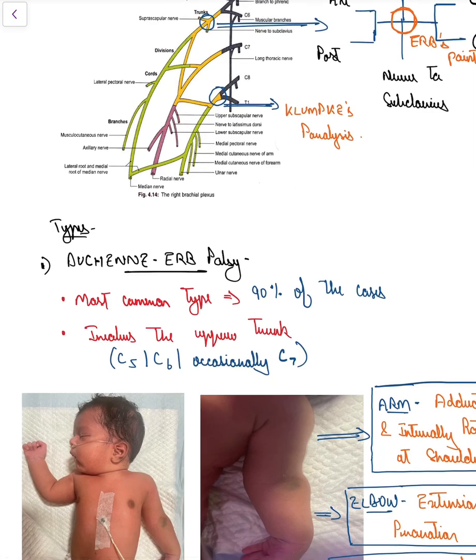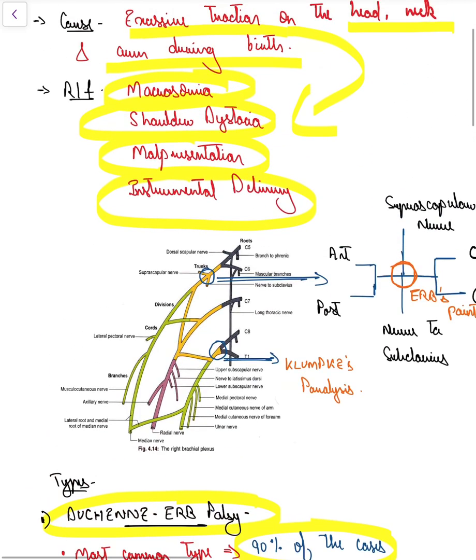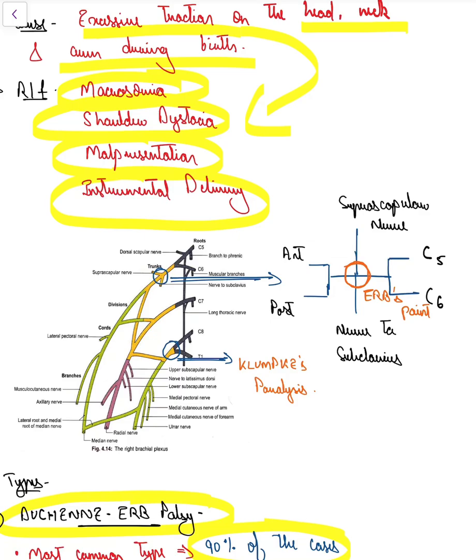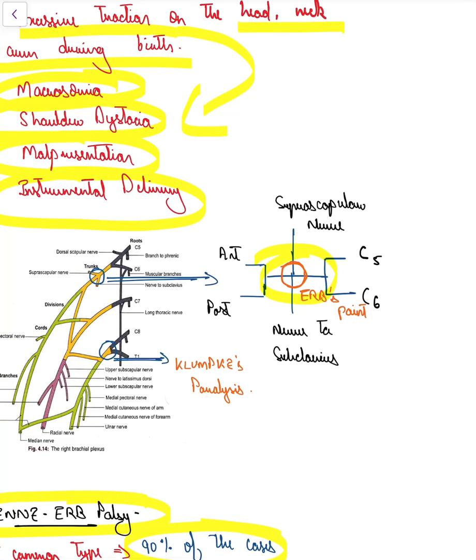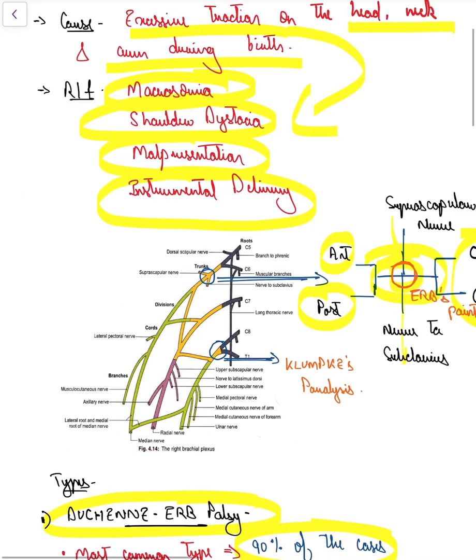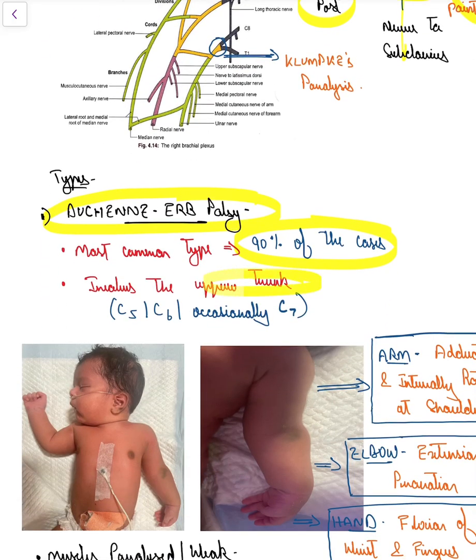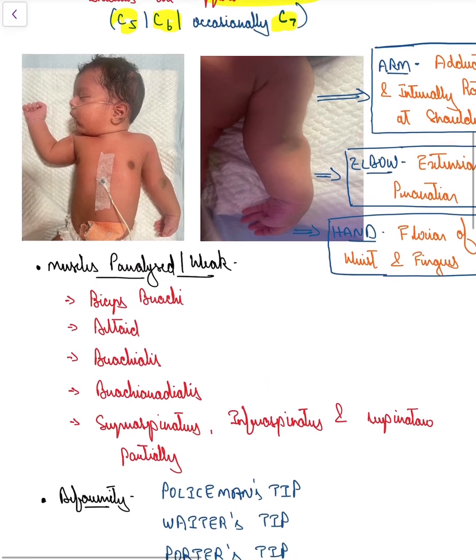Coming to the types of brachial plexus injury, one is the famous Erb's palsy or Duchenne-Erb's palsy. This is the most common type, accounting for around 90 percent of cases. This injury happens at Erb's point, which is the meeting point of six nerves - the C5, C6 trunk going into the anterior and posterior divisions, the suprascapular nerve, and nerve to subclavius. Whenever there is injury to this point, we can expect Erb's palsy, involving the upper trunk C5, C6, and occasionally C7.